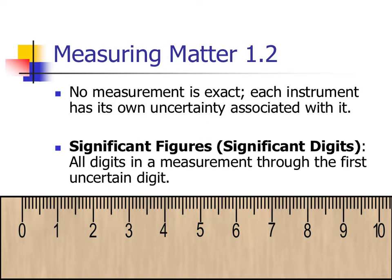You've probably heard the term sig figs — not sig newtons or anything like that. Significant figures, or significant digits, give us an arbitrary kind of ruler, so to speak. With this ruler we're able to make good use of our measurements. So we say measure twice, cut once in the shop.